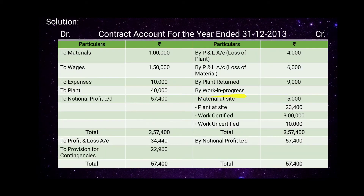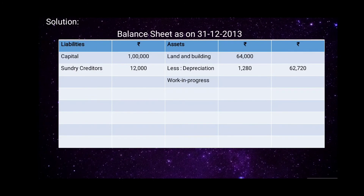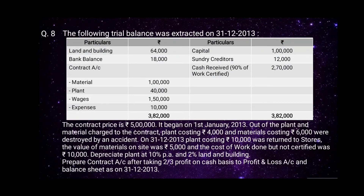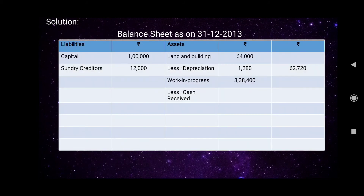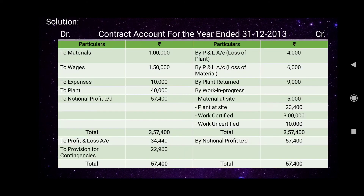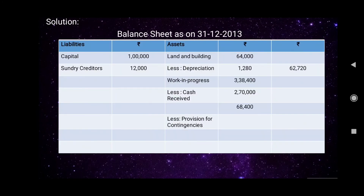For Work in Progress on the assets side: the total of materials at site rupees 5,000, plant at site rupees 23,400, work certified rupees 3 lakhs, and work uncertified rupees 10,000 amounts to rupees 3,38,400. Less cash received rupees 2,70,000 gives rupees 68,400. Less provision for contingency rupees 22,960 gives total Work in Progress of rupees 45,440.